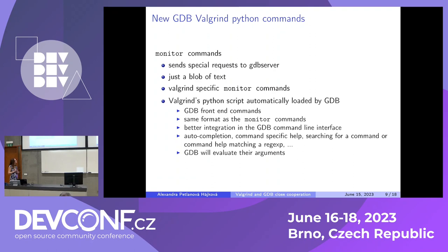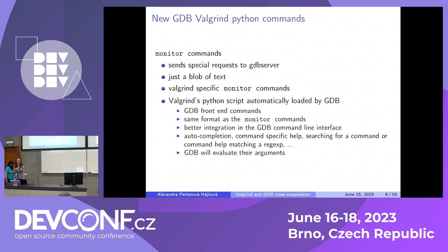This feature brings better integration. Before, you had to look up what the commands were, but now you can type 'help valgrind' and GDB will tell you which commands are possible. There is also auto-completion, so GDB will automatically complete the command and you don't have to remember it. You can even search for commands. What I think is best is that GDB will evaluate the command arguments. If you have some undefined variable and want to ask Valgrind whether it's defined, before this feature you had to ask GDB to evaluate the address of the variable yourself and then feed that to the monitor command — but now GDB will evaluate any argument for you, which is very convenient.